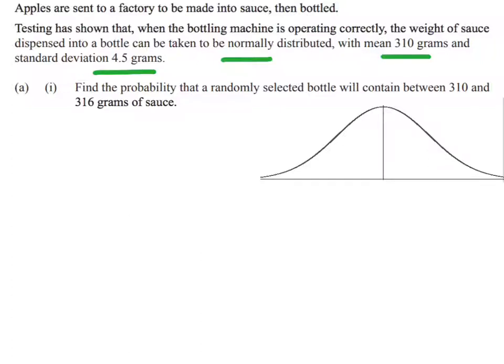We want to find the probability that a randomly selected bottle will contain between 310 and 316 grams.